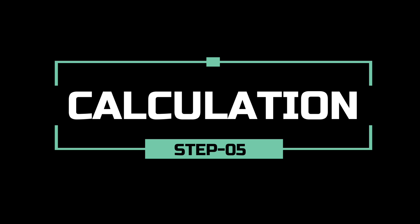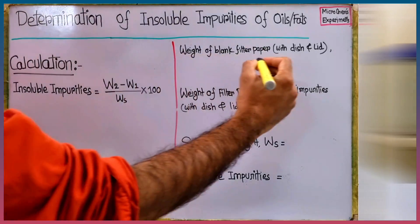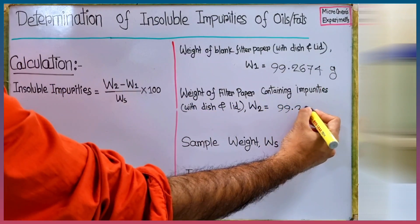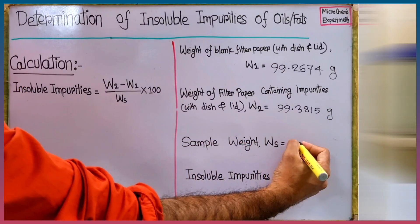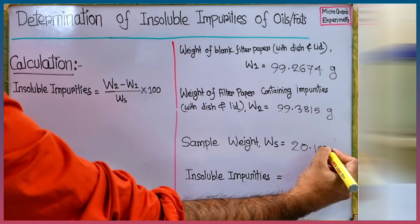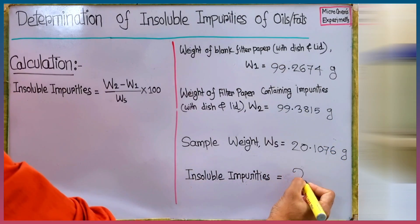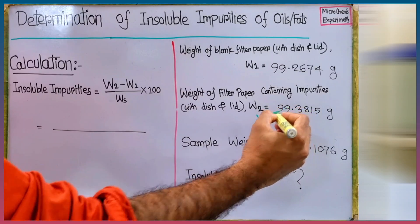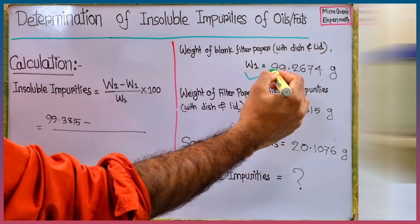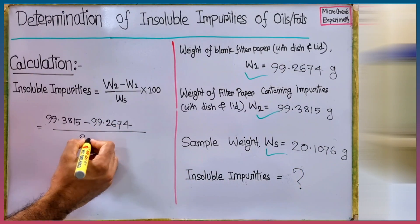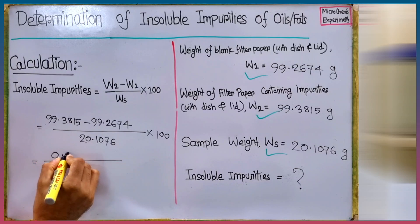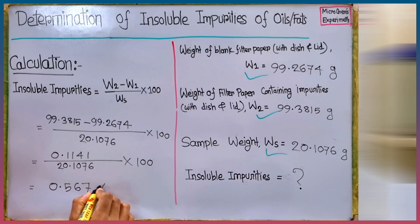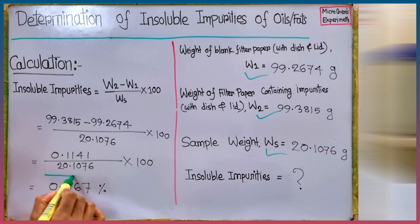Let's calculate the insoluble impurities content of our tested sample. Weight of blank filter paper with dish and lid W1 is 99.2674 grams. Weight of filter paper containing impurities with dish and lid W2 is 99.3815 grams. Sample weight Ws is 20.1076 grams. By solving the equation, we get the insoluble impurities of our tested oil sample is 0.5627 percent.